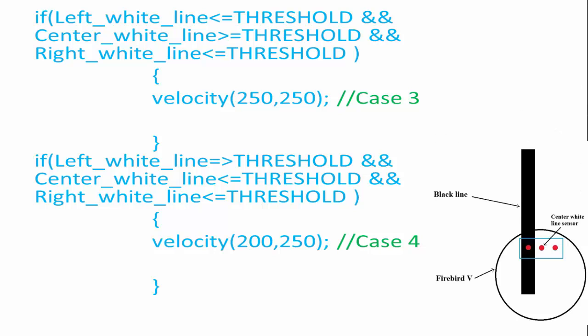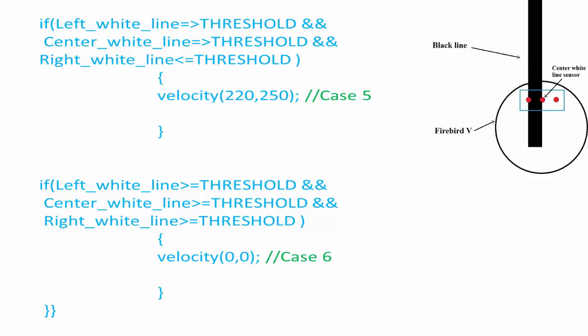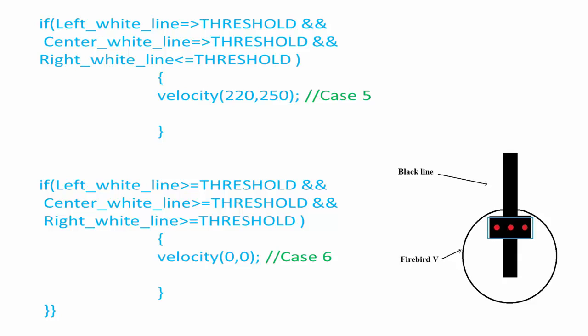Case 4 is when left_white_line is greater than the threshold and right_white_line and center_white_line are less than the threshold — the robot should turn soft left. Case 5 is when the black line is below the first and second line sensors — the robot should turn soft left with a slightly higher velocity on the left wheel compared to Case 4. Case 6 is when all three — left_white_line, right_white_line, and center_white_line — are greater than the threshold; the robot should stop.